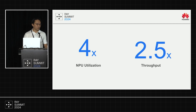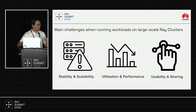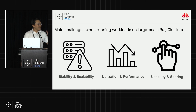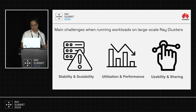The outcomes: system utilization improved by 4x and throughput improved by 2.5x. These are conservative, end-to-end numbers — in some cases we've seen improvements as high as 20x or 40x. These results exceeded our expectations.